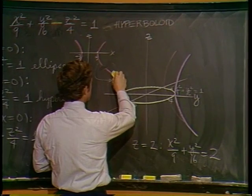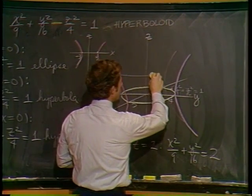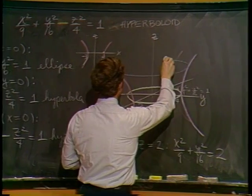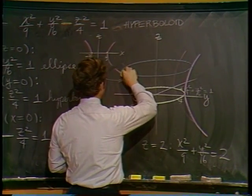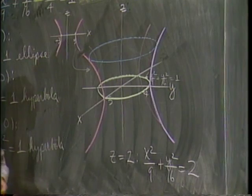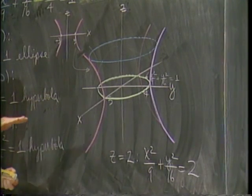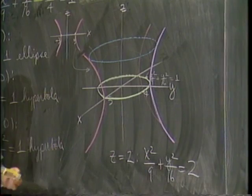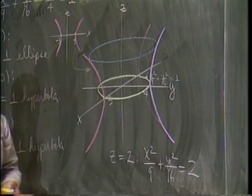So if I go up 2 units on the z-axis, turns out that I get again another ellipse. It's going to look something like that. And if you took more and more of these horizontal traces, you'd see all of these ellipses stacked one on top of the other.